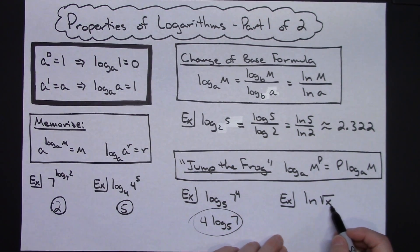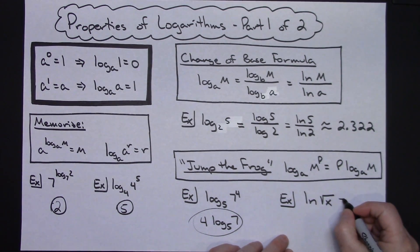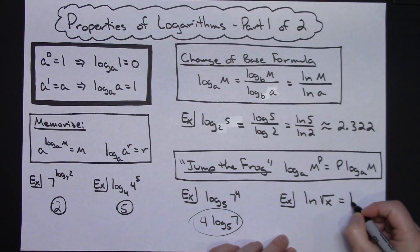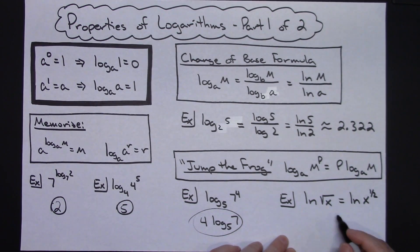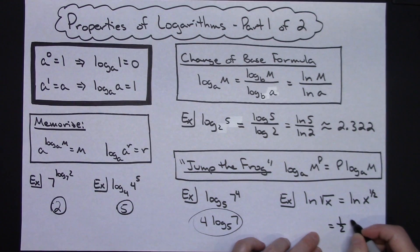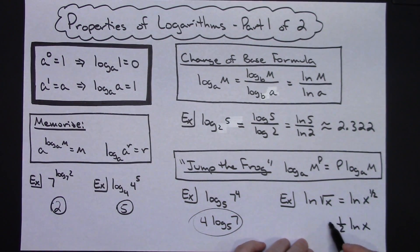Now this one right here may not look like you can implement this, but this natural log of the square root of x can be rewritten. If you remember your radical rules going back and forth between exponents and radicals, I could rewrite that as the natural log of x raised to the one half because that's square root.